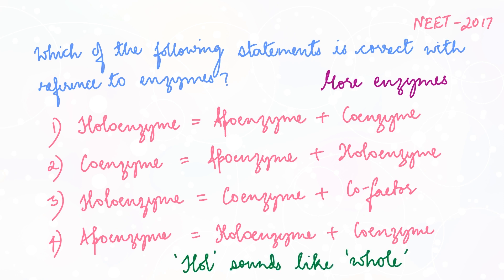I use the mnemonic 'whole,' meaning complete — the complete enzyme is the holoenzyme. If you remember this, you can easily rule out options 2 and 4. What remains is options 1 and 3. In option 3, both terms have the prefix 'co,' which means 'along with' or 'in addition to,' so the main part is missing. Therefore the answer is option 1: holoenzyme = apoenzyme + coenzyme.